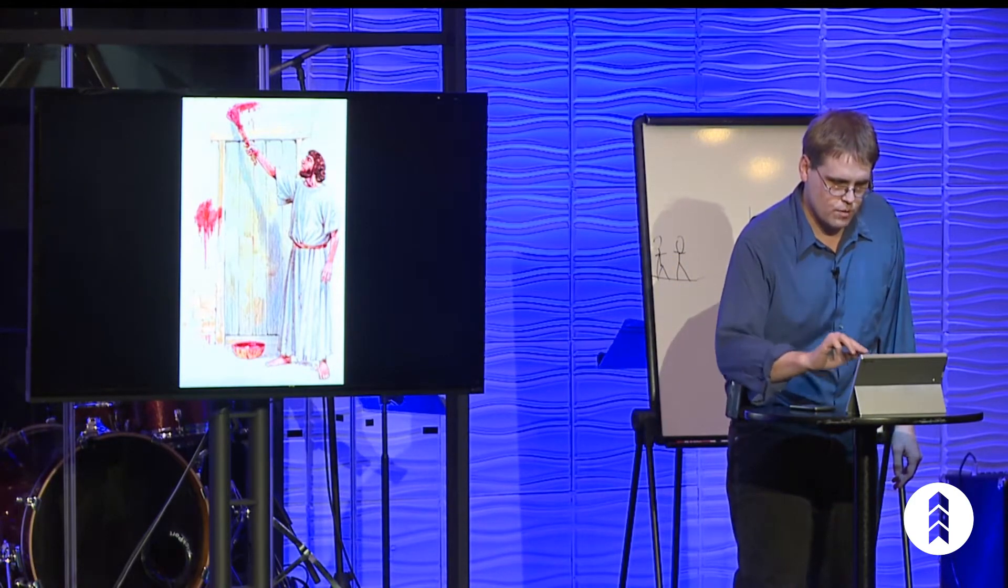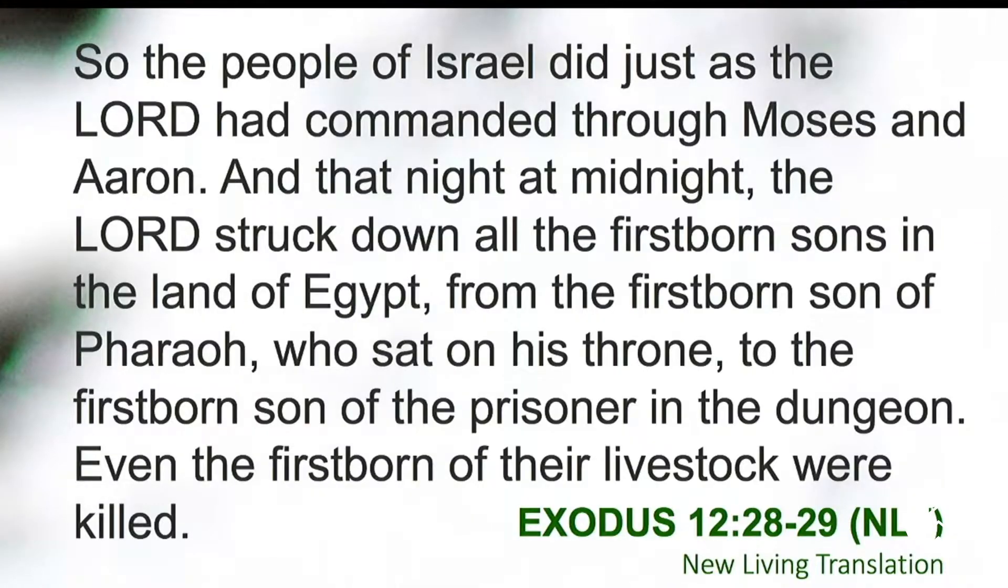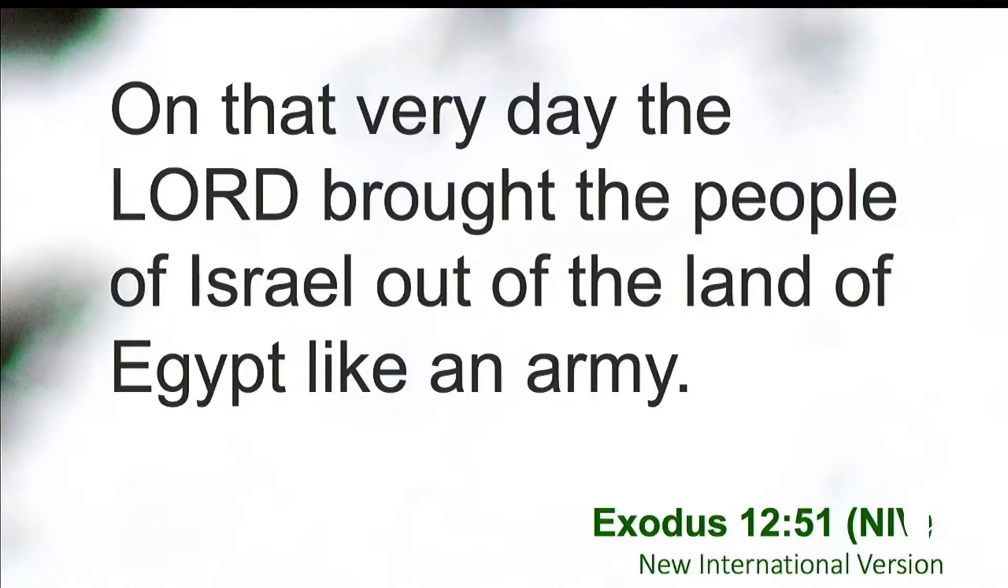For the Lord will pass through the land to strike down the Egyptians. But when he sees the blood on the top and sides of the door frame, the Lord will pass over your home. He will not permit his death angel to enter your house and strike you down. They had to put lamb's blood on their doorposts or the death angel that was coming would have killed them. Now we're going to continue in Exodus 12. So the people of Israel did just as the Lord had commanded through Moses and Aaron. And that night at midnight, the Lord struck down all the firstborn sons in the land of Egypt. On that very day, the Lord brought the people of Israel out of the land of Egypt like an army. So God brought them out of slavery that day.